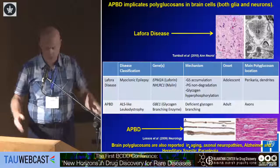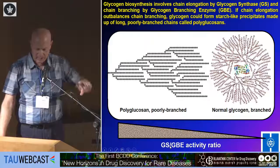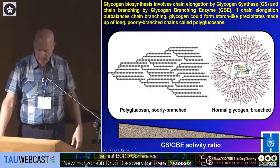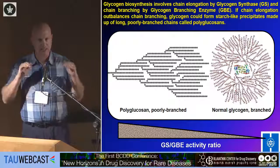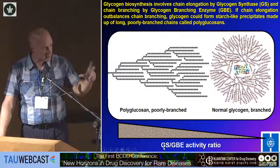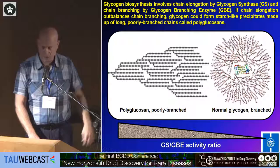Polyglucosans are also reported in other disorders. To summarize: if you look at the balance between glycogen synthesis and glycogen branching activity, the higher this ratio, the more likely you are to have polyglucosans. The therapeutic strategy is either to inhibit glycogen synthase — which is not really needed in the brain under normal conditions — or to activate or stabilize the branching enzyme, which is mutated in APBD, or to degrade the polyglucosans, which is a much more difficult task.